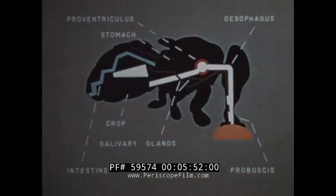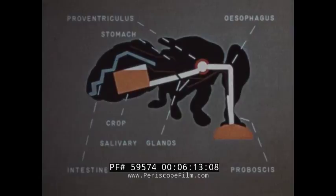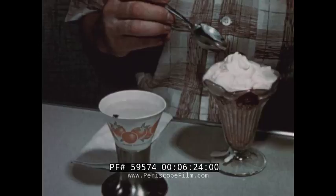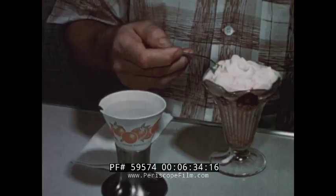Oftentimes it also regurgitates partially digested food from its crop to help liquefy food it wishes to eat. The proboscis then sucks up the food — germs included — into the esophagus. The proventriculus directs the flow of food into the crop. Supposing this fly were to alight next on your strawberry sundae. The filthy germ-infested food in the fly would be regurgitated. The fly's feet would add more contamination. A single housefly has been known to carry over six and a half million bacteria at one time. It becomes obvious why houseflies are such a health menace.